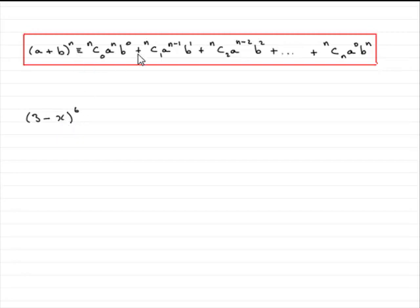So according to this expansion, what we've got is that 3 minus x to the power 6 is identical to 6C0 multiplied by a to the power n, that's 3 to the power 6, multiplied by b to the power 0, b you remember is minus x, that's minus x to the power 0. So that's the first term in the expansion.